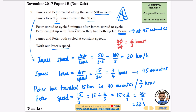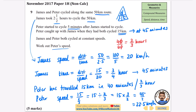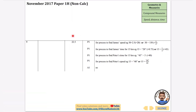Peter's speed is 22.5 kilometres per hour. This is a really hard question. To summarise: we found James's constant speed, worked out it took him 45 minutes to reach 15 km, which meant Peter covered the same distance in 40 minutes, and dividing distance by time gave us 22.5 km/h. We did get 22.5 — and this was worth 5 marks.